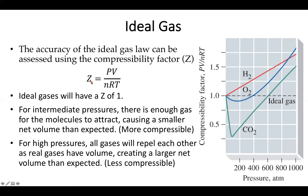A good way to think about this: if Z is greater than one, my volume is going to be a lot larger than expected. The reason is that at high enough pressures or concentrations, you have to deal with the fact that real gases have real volume. You can only put so many CO₂ molecules into a space before you start forming a liquid. As a result, you're going to see a lot higher pressure and more volume than you'd expect compared to point particles.